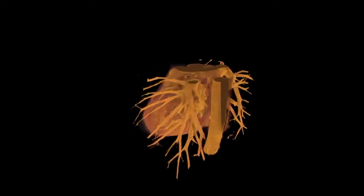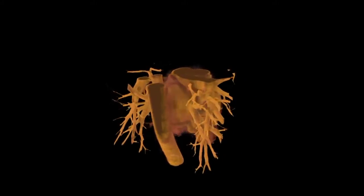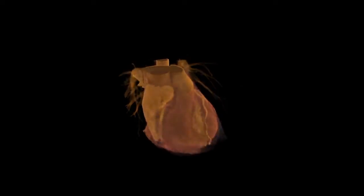The right heart muscle pumps the blood gathered from the body through the blood vessels into the lungs. The left heart muscle draws the oxygen-enriched blood from the lungs and pumps it into the entire body.